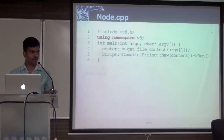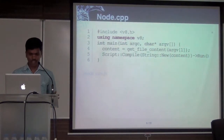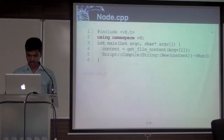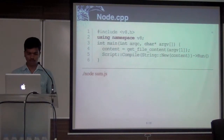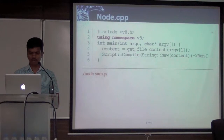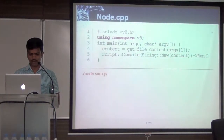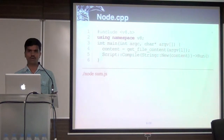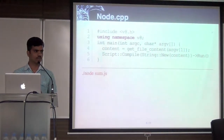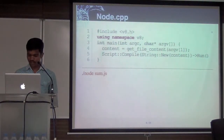This is a sample program — not a complete program. Just see the first line: it says include V8. What I'm doing is getting the first argument, getting the file content from the first parameter, and then doing something. You compile it, and then run it: node space sum.js. This is a C++ file which we created — named node.cpp. You compile it, get an executable, and execute the file with 'node sum.js'. Sum.js is the first argument, so our simple program gets the content from sum.js, compiles it, and prints the output to the screen.